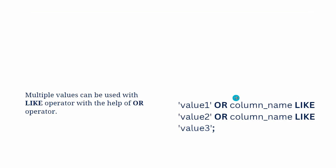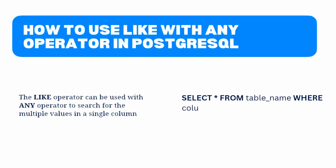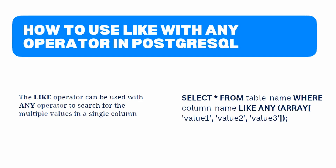Now move to the last topic of this tutorial: how to use a LIKE operator with the ANY operator. When we need to search for multiple values in a single column of a table, we can also use the ANY operator with a LIKE operator. The ANY operator allows us to search for any value in an array of values, making it a more efficient way to search for multiple values. After the WHERE clause, we specify the column name, then after the LIKE operator, we specify the ANY operator, and within the ANY operator we provide the array of values we want to search for in that column.